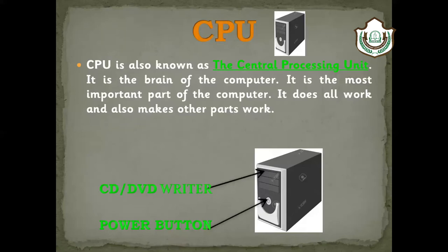The CPU does all the work and also makes the other parts work. CPU ko hum Central Processing Unit ke naam se jante hain. This is our computer's brain — the most important part — because it does all the work and works all the parts.